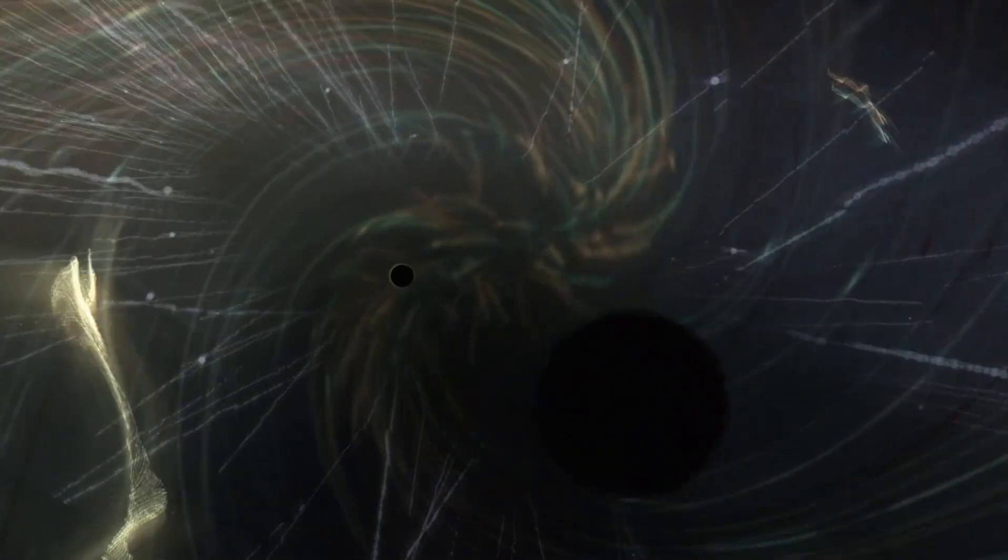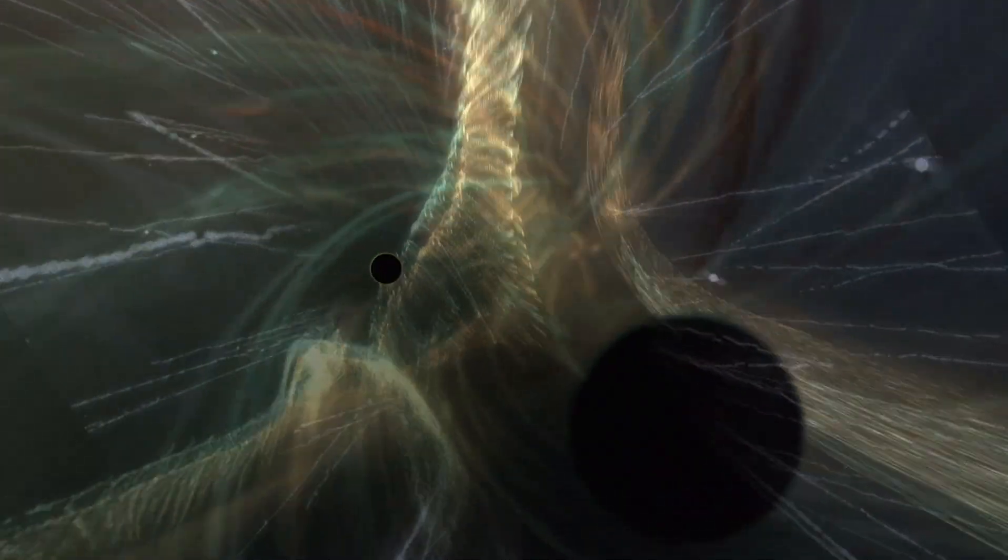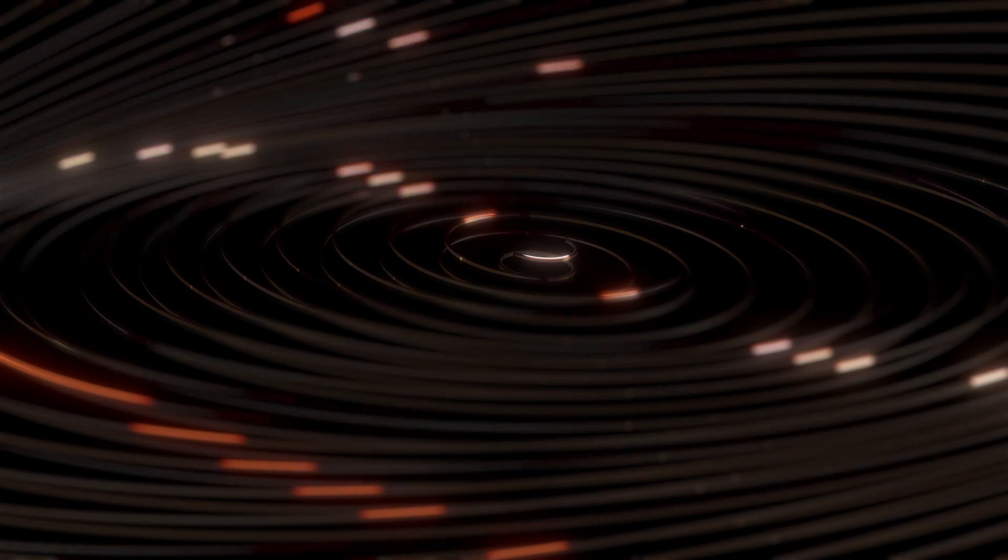But what if it's neither of those but instead white holes? White holes are theoretical objects that, if they exist, represent the reverse of black holes in terms of their behavior and effects on the surrounding space-time. While black holes are known for their intense gravitational pull,